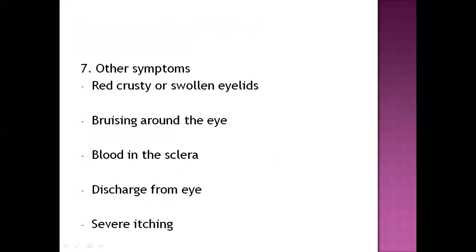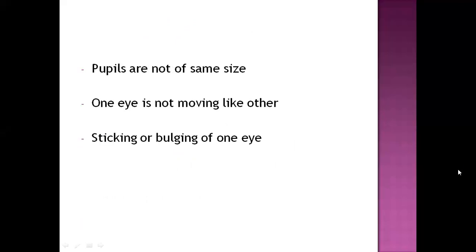Other symptoms include red or swollen eyelid, bruising around the eye, redness, blood in the sclera, discharge from the eye — with or without blood — and severe itching of the eye. Pupils may not look the same size because dilation and contraction of the pupil becomes different after any kind of trauma or infection. One eye may not be moving like the other, indicating a problem in orbital muscles. There may also be sticking or bulging of one eye, affecting the function of the other eye as well.